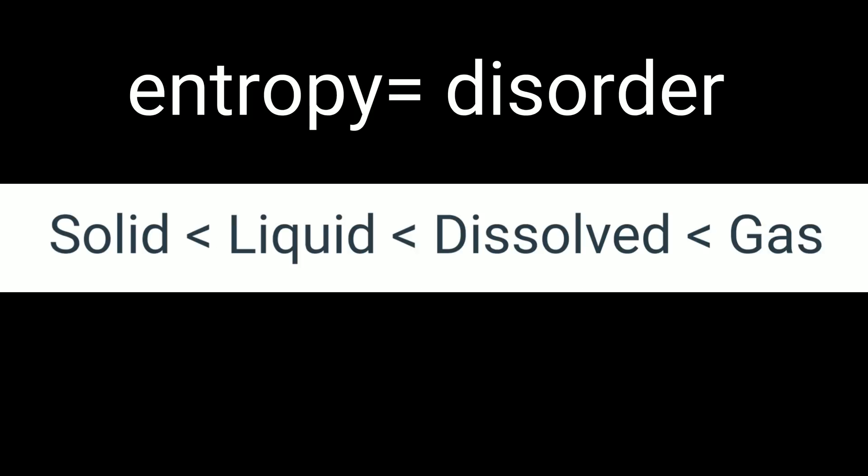Another important difference in the phases is the entropy. Entropy is defined as disorder. Solids have very low entropy, followed by liquids, then aqueous, and finally, gases have very high entropy because they are in constant, random, straight line motion. You cannot contain a gas without a lid in your container.